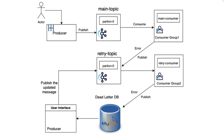If that message fails due to any exception, the retry consumer will retry processing that message a pre-configured number of times. In case of failure after that many attempts, the retry consumer will put that message in the database so the message is not lost and the retry consumer is not blocked. We can also have an architectural pattern where a user interface has a view of that database. If we know what the failure is, we can update and re-publish the message — but not to the main topic. We publish the updated message back to the retry topic.